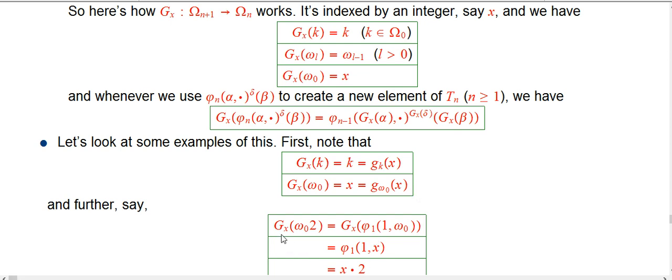A little bit more, we could say, let's look at the big G sub x function on, let's say, the double of omega nought.